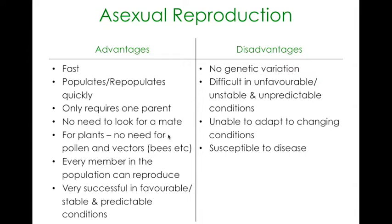For plants, you don't need pollen and vectors like bees to distribute the pollen. In asexual reproduction it's a very quick process — every member in the population can reproduce, compared to sexual reproduction where you need both members to join together. Asexual reproduction can be very favorable in stable and predictable conditions where it's optimized for an organism to reproduce at a rapid rate.